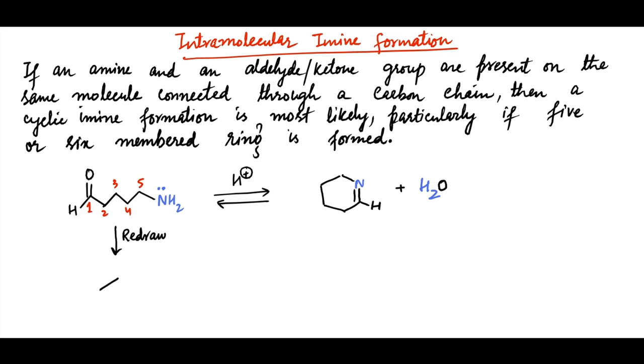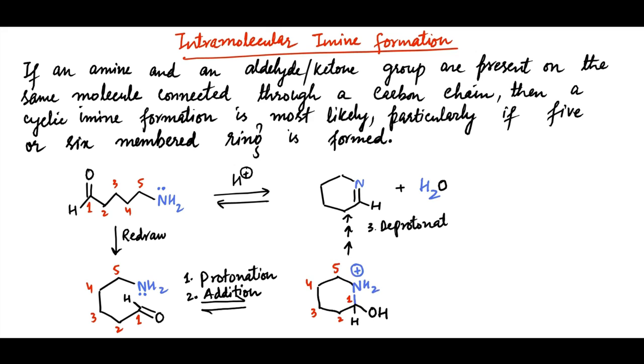We can redraw this compound so that carbonyl and NH2 are shown near to each other. The same sequence of steps, as in the case of intermolecular case, happens here. That is protonation followed by nucleophilic addition of nitrogen lone pair to form tetrahedral intermediate with positive charge on nitrogen. Then other steps like deprotonation, protonation of OH to change it into good leaving group H2O, followed by elimination of water and deprotonation of positively charged nitrogen, leads to the formation of cyclic imine.